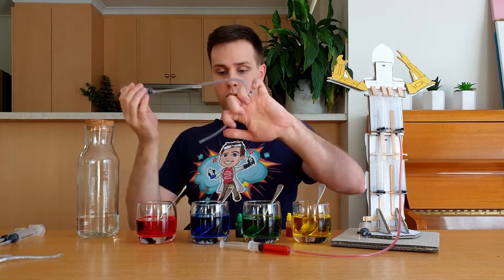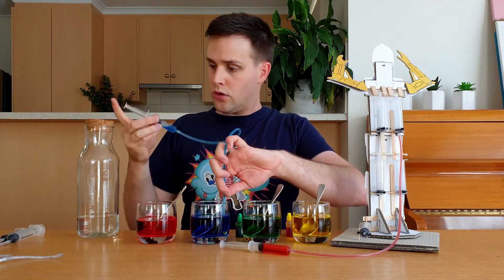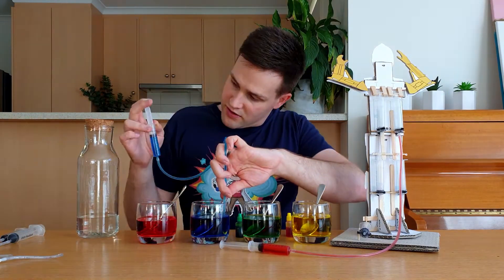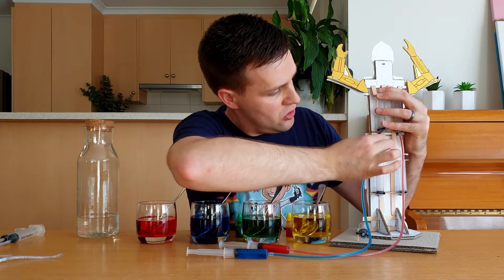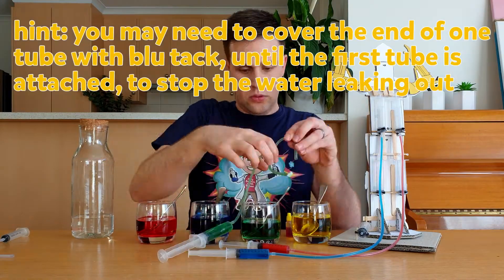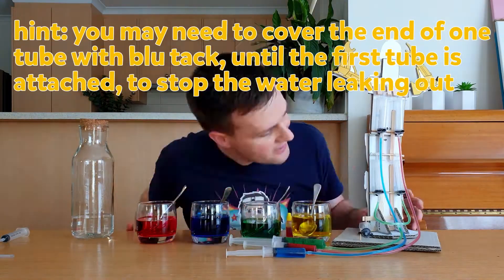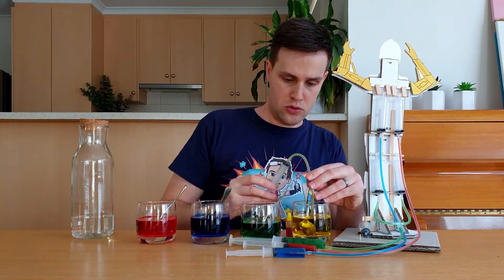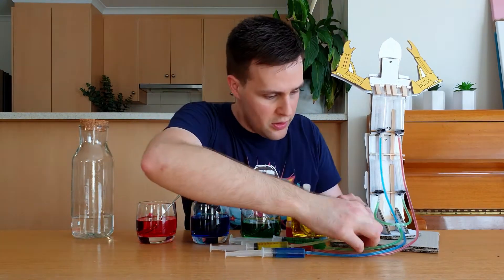Then draw up some water into the other syringe attached to 50cm of tube, remove any air bubbles, and attach this to the other arm. In the same way, attach the 10cm pieces of tube to the syringes that move the waist, and the 20cm piece of tube to the syringe that moves the whole body.